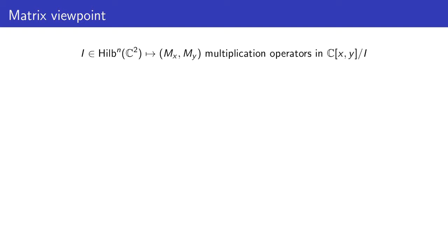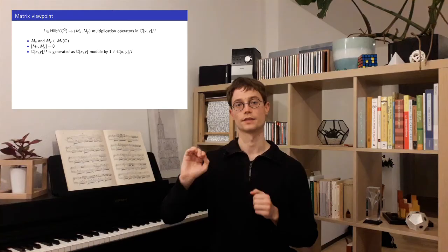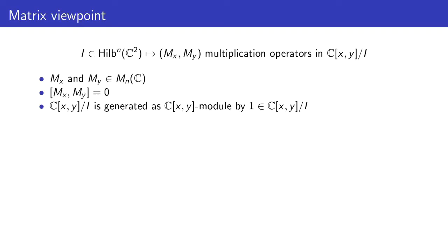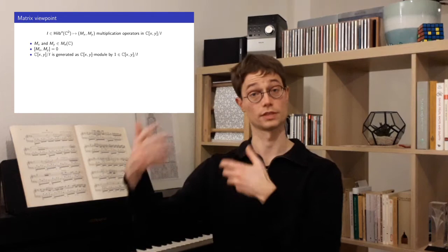Let's see how we can describe the punctual Hilbert scheme as a space of commuting matrices. Take an ideal I in the Hilbert scheme. The quotient C[x, y] divided by I is a vector space of dimension n. In this vector space, consider two operators Mₓ and M_y, the multiplication operators by x and by y. This gives two matrices of size n which commute, since multiplication by x and by y commutes, and which admit a cyclic vector. We can choose, for example, the vector given by the image of 1 in the quotient. From this vector, we can generate the whole vector space just by applying the two matrices Mₓ and M_y, perhaps several times. The space of pairs of matrices with these properties is nearly the whole punctual Hilbert scheme.